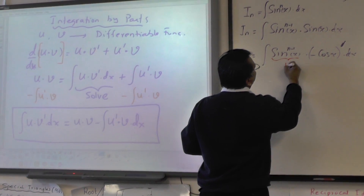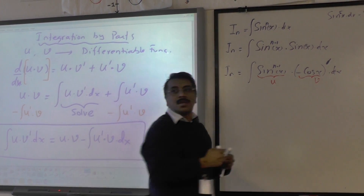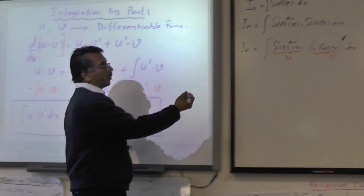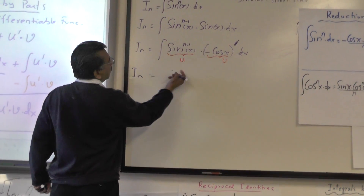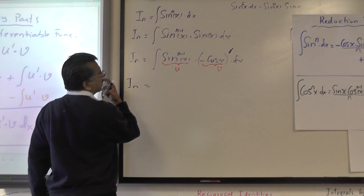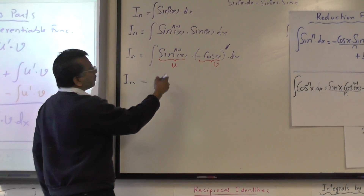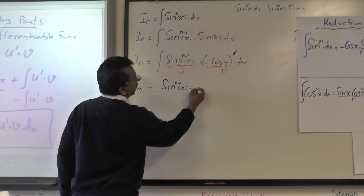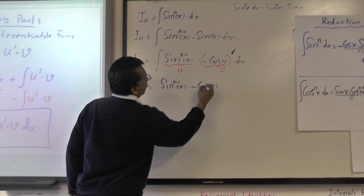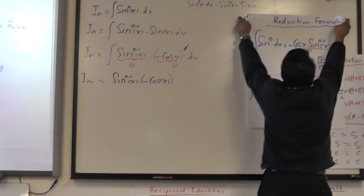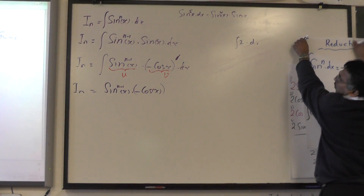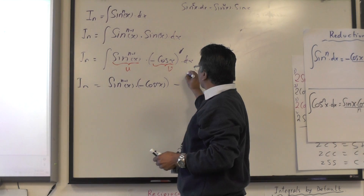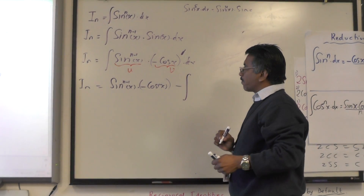Now looking at the integration by parts formula: u is sinⁿ⁻¹x and v is −cosx. The first part, u times v, gives: sinⁿ⁻¹x times (−cosx). Then it says minus the integral of the derivative of the first part times v. Let me show the scratch work for the derivative of u.